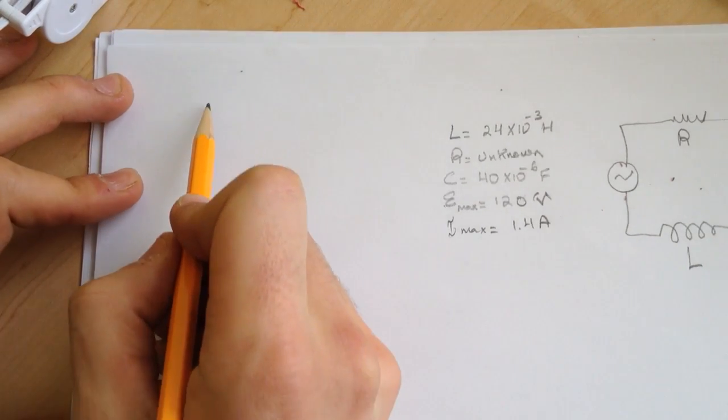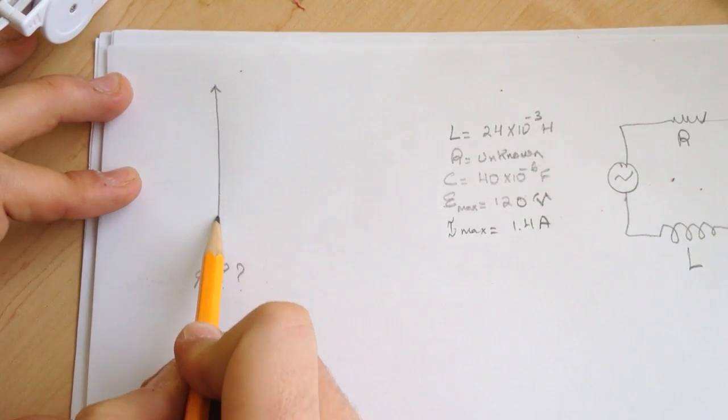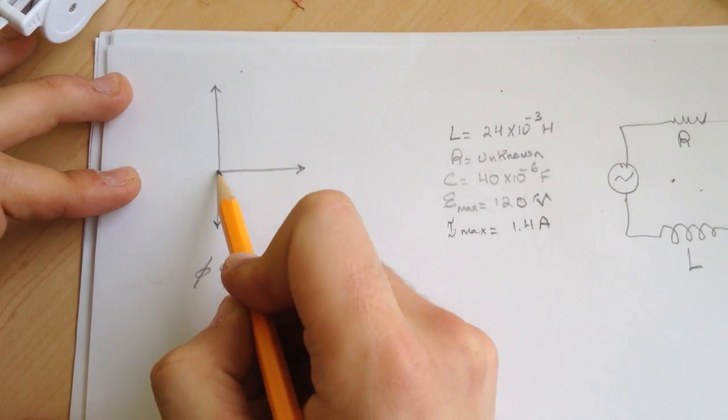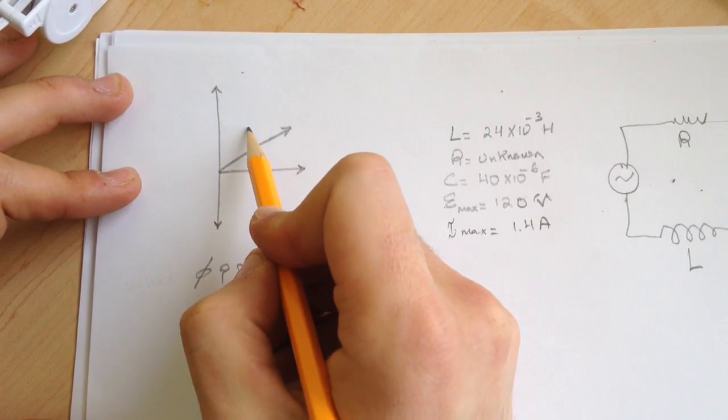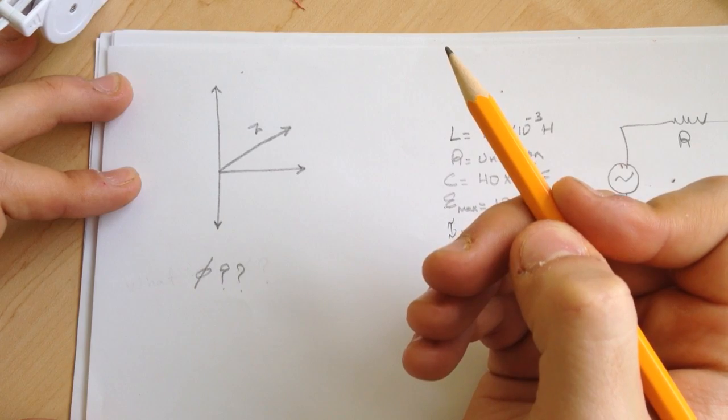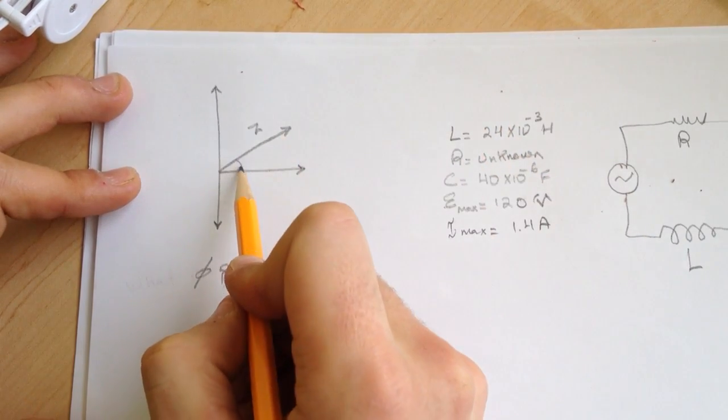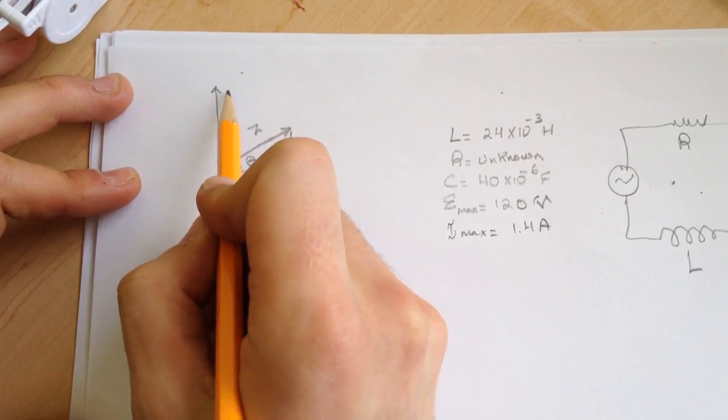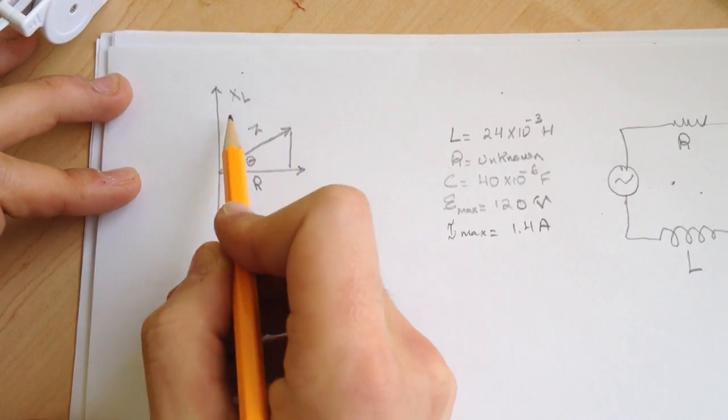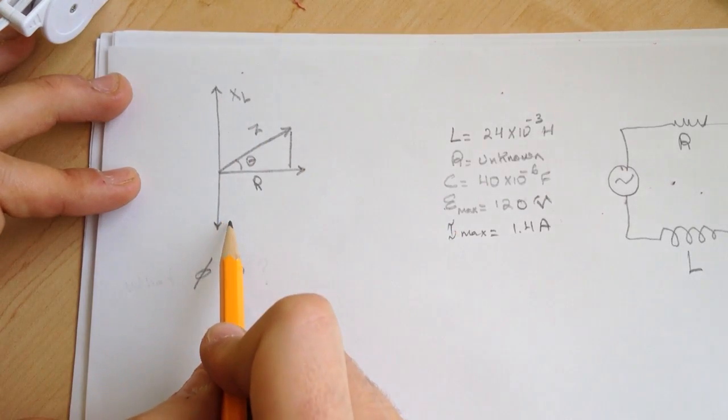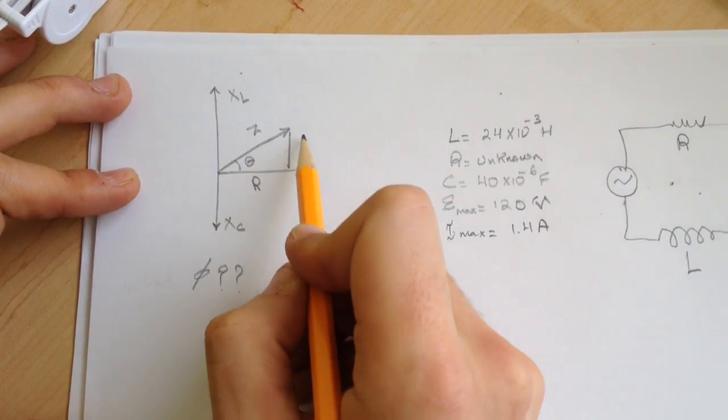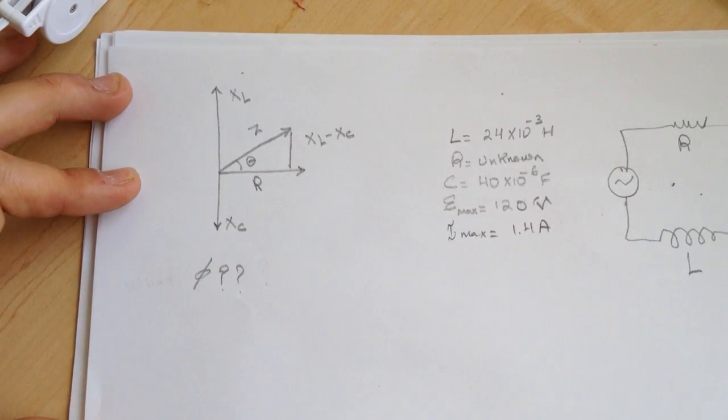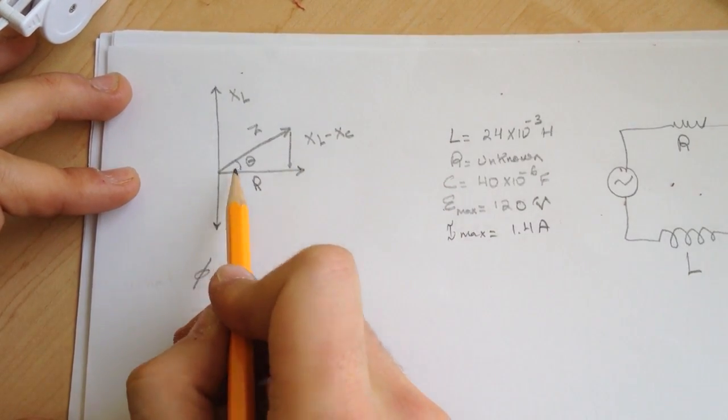The phi is the angle between the impedance and the R. If we say that this is XL, this is the reactance of the inductor, and this is the reactance of the capacitor. So this is XL minus XC. This is the angle we're gonna find.